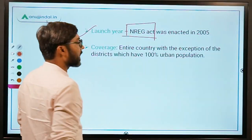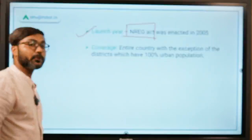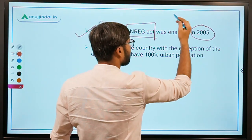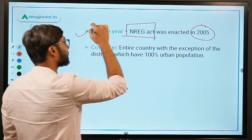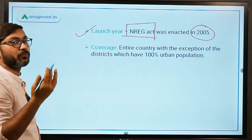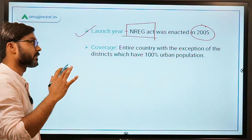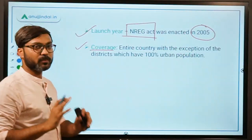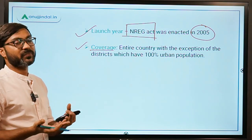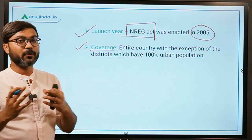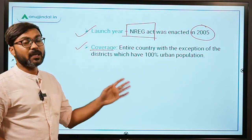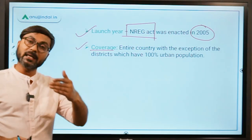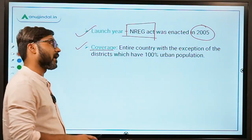The National Rural Employment Guarantee Act was enacted in the year 2005, but the scheme came into force in the year 2006. Regarding coverage, you don't need to remember any specific exclusions because this scheme covers the entire country, except areas that have 100 percent urban population.